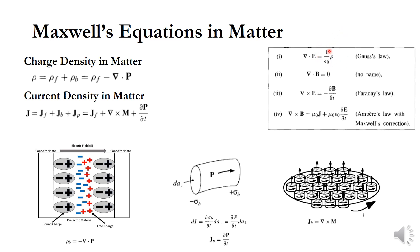In Gauss's law, the static charge density produces del dot E, the diverging electric field. There is no such magnetic charge to produce a diverging magnetic field, hence there is no diverging magnetic field — in other words, the magnetic monopole does not exist. Faraday's law says the change in magnetic field dou B by dou T produces or induces a curly electric field.